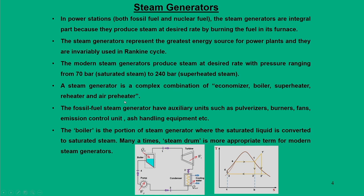We will see how these components are organized in a particular steam generator unit. Apart from these there are auxiliary units like pulverizers, burners, fans, ash handling equipment, and so on.